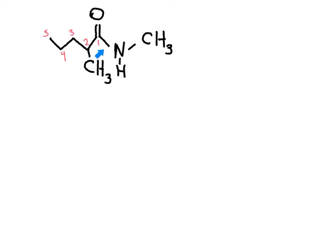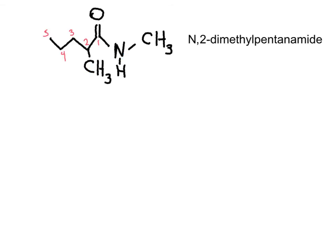This example is very similar to the previous one. The only difference is that now we have a pentanamide with a substituent in position number 2 and also on the nitrogen. Grouping again, the name is N,2-dimethylpentanamide.